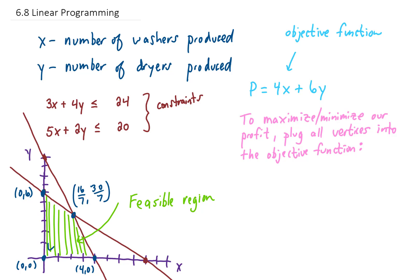Let's start with the vertex (0, 0). If we plug x equals 0 and y equals 0 into our profit function and simplify, we just get 0 for our profit. I have a feeling that that's the vertex where we're going to minimize our profits by making no washers and no dryers.